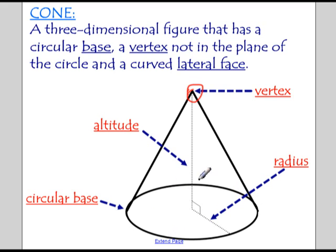So it's made up of the base, which is a circle, the vertex, which you'd see it says not in the plane of the circle. That just means it's 3D, so it's up above it. And then that lateral face, which is the part of the cone, the ice cream cone, that you would actually eat if this was an ice cream cone. So the altitude, that's the same vocab that we used in the pyramid. And we've got the radius of our circle there, and so on.